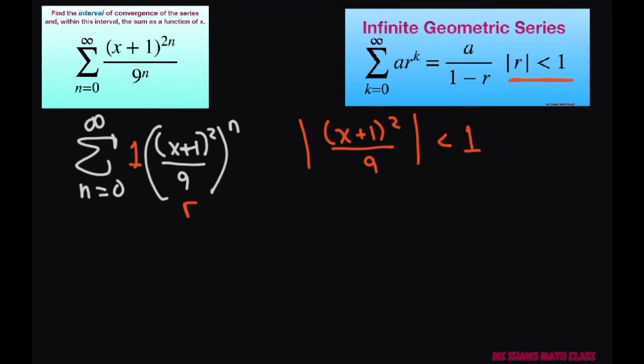Now let's solve for this. We cross multiply. So we get x plus one squared is less than nine. When you square root both sides you get x plus one is less than three. And we'll put absolute value sign here.